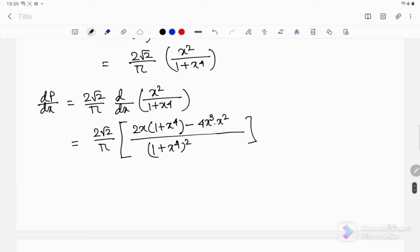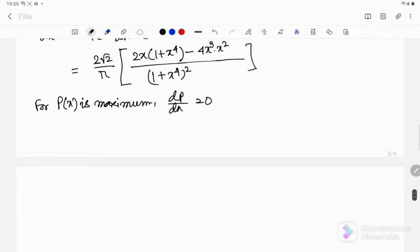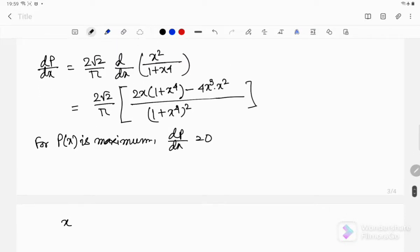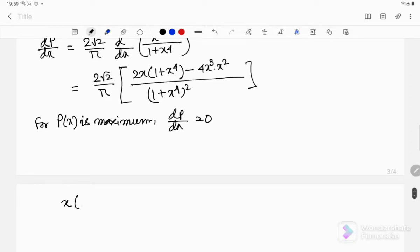Now for P, the probability density, to be maximum, we should have dP/dx = 0. So in that case, we will write that times (1+x⁴) minus 2x⁵ = 0.